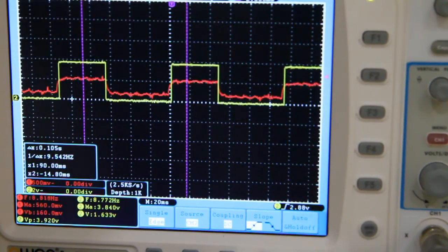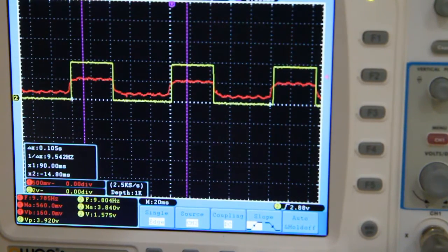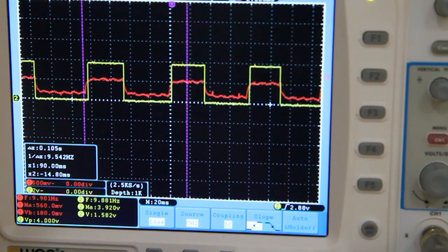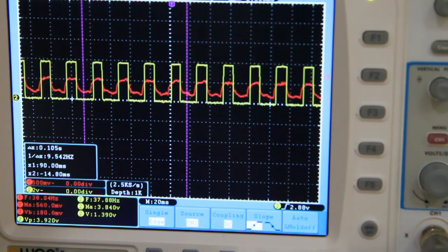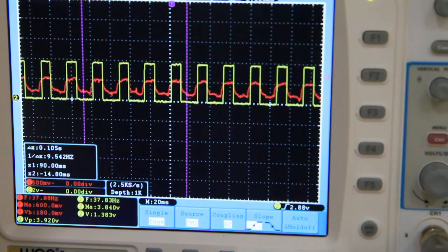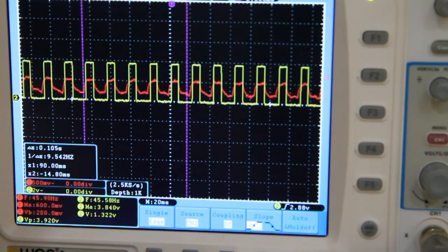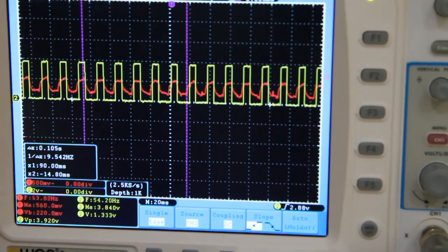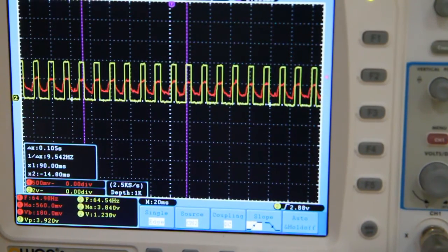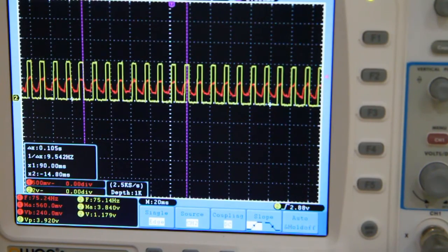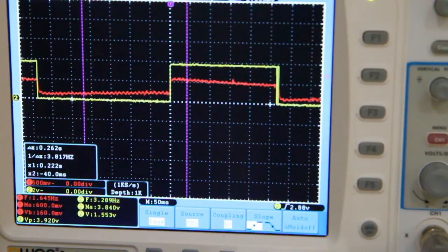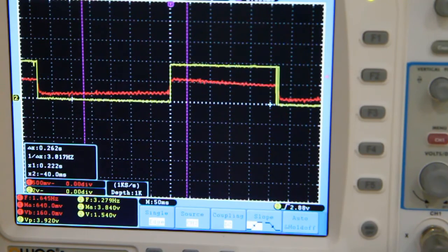Now we'll check that it works over a range of frequencies. We're currently at 10 hertz. Increasing the frequency to 40 hertz, still working okay. 50 hertz, still working. 70 hertz, still going. That's fine for what we're doing. We'll take it out to the meter box for a real-world test.